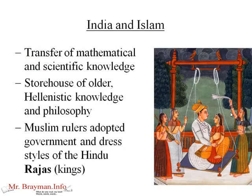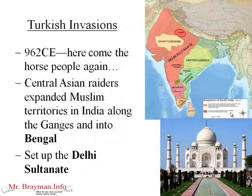We get this mixing of India and Islam. There was a huge transfer of mathematical and scientific knowledge between India and the Muslim world. India was also holding on to a lot of older Greek Hellenistic learning from the time of Alexander the Great. India is a big, soft, comfortable place, and so these Muslim rulers ended up adopting a lot of the government and dress styles of the Hindu Rajas. India almost absorbed Islam, but not exactly.